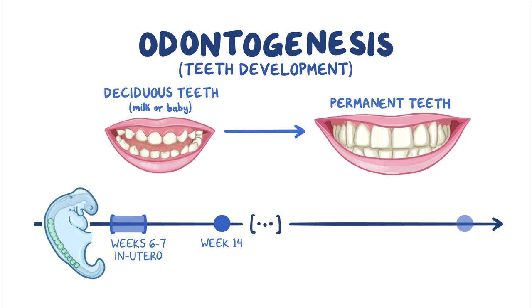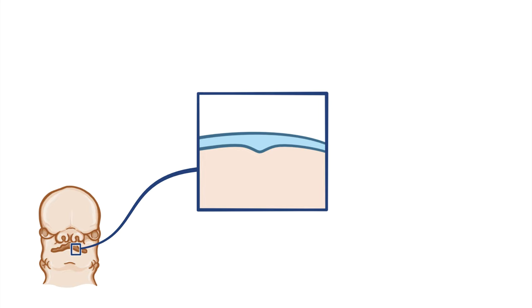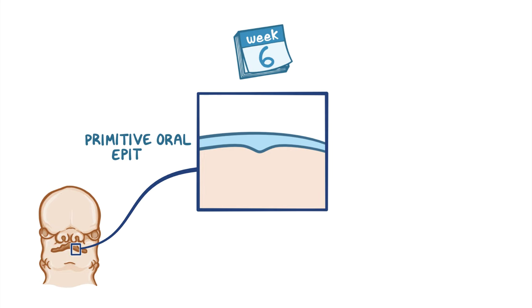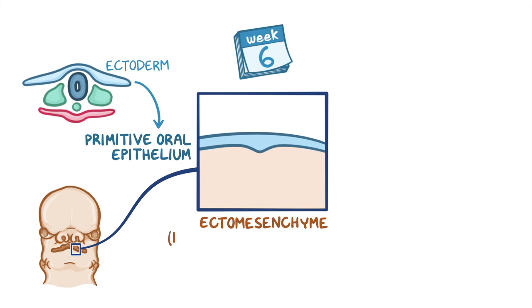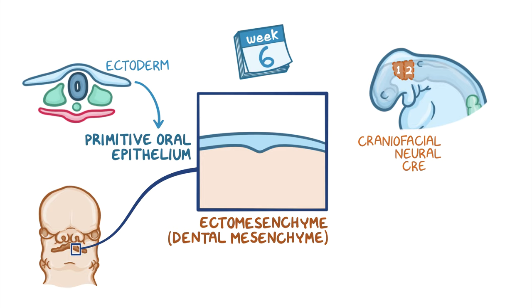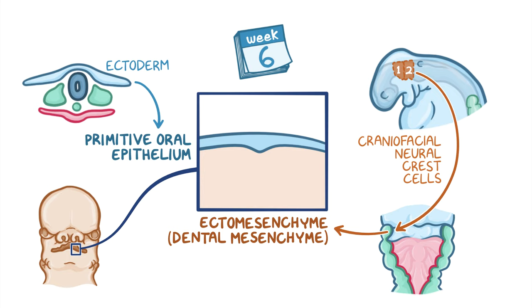Teeth are one of the most diverse organs in humans, both morphologically and functionally. The development of teeth begins around week 6 from two tissue components: the primitive oral epithelium derived from ectoderm, and the underlying ectomesenchyme or dental mesenchyme. The dental mesenchyme derives from craniofacial neural crest cells that migrate from the developing midbrain and the first two rhombomeres into the first branchial arch.